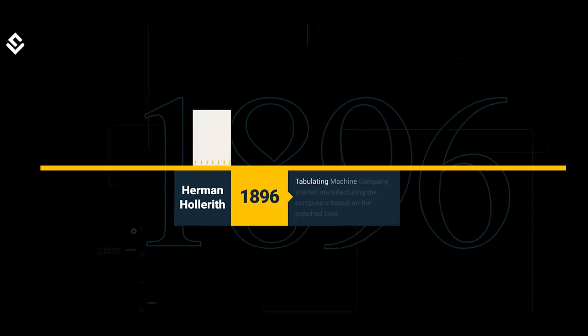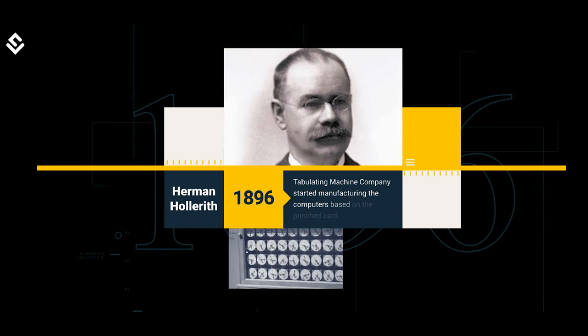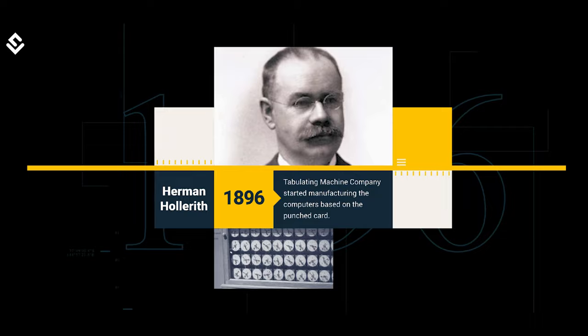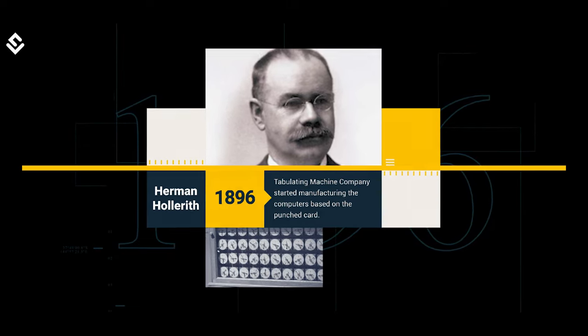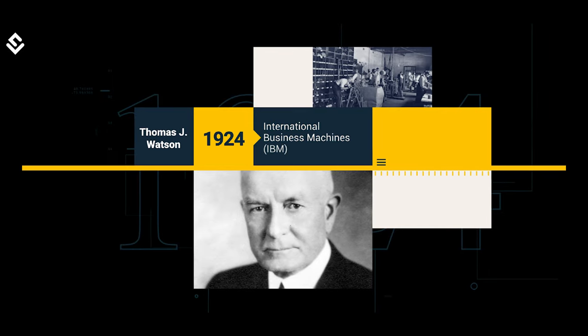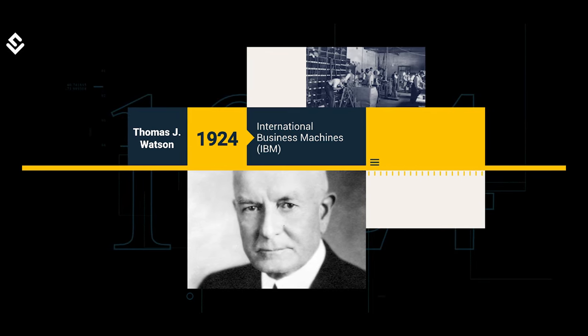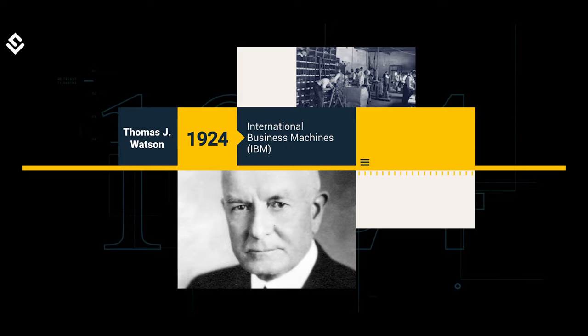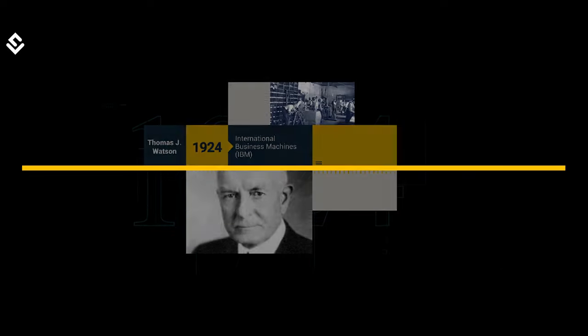In 1896, Hollerith formed the Tabulating Machine Company, which started manufacturing computers based on the punched card. Later, Thomas J. Watson became the president of the company and it was renamed International Business Machines — IBM Corporation — in 1924.